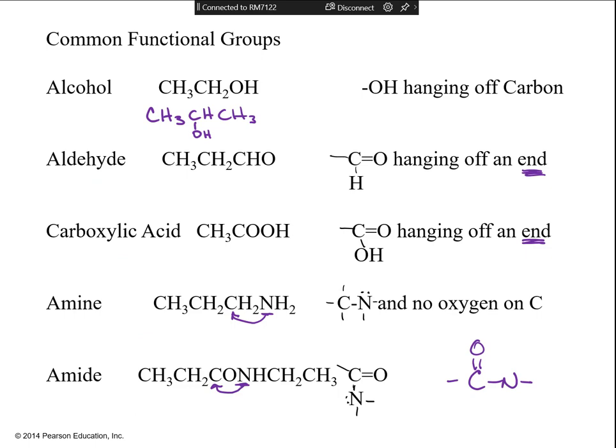Then we talked about what you see when there are oxygens. The first example is an alcohol. An alcohol is a pretty common functional group — it is when a carbon just has an OH attached to it, nothing else. You always have to look at the carbon and see what else is connected. If there are only hydrogens or carbons connected and it's an OH, then you know it's an alcohol.